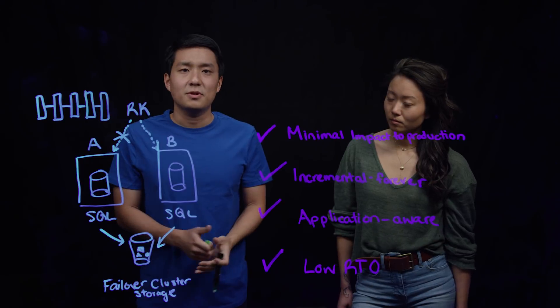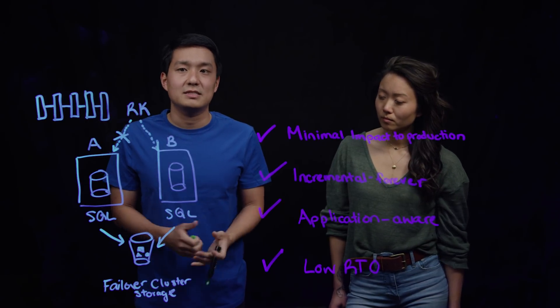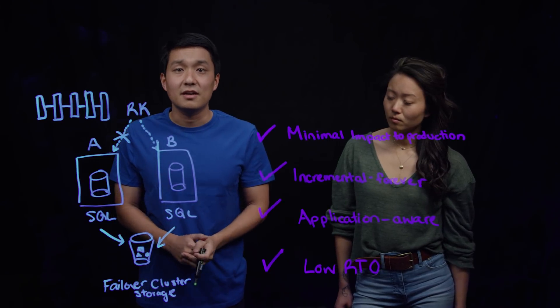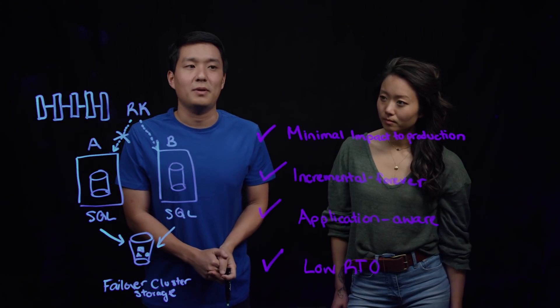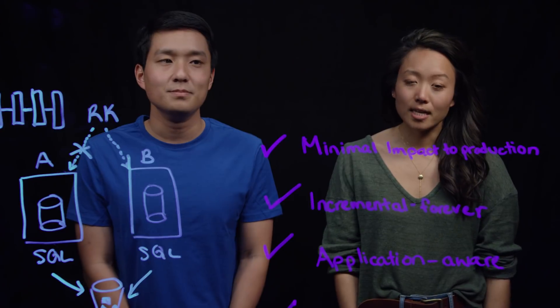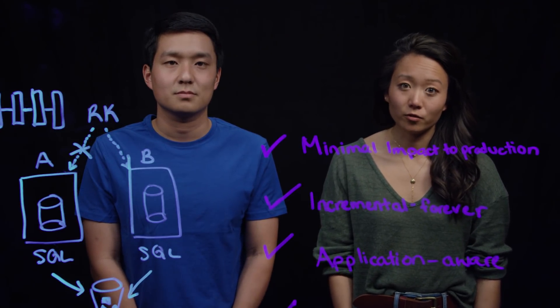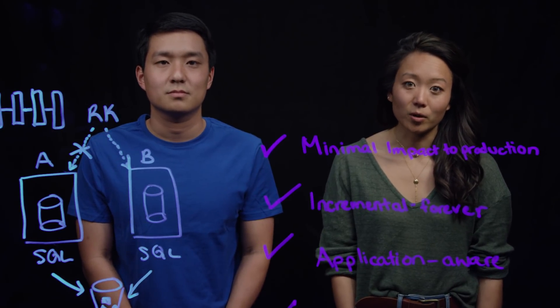We interact with always-on availability groups very similarly. We detect databases that are a part of these groups. And in the case of an availability group Failover, a similar thing occurs. No new full backup is required and no manual steps are needed. This has a huge impact on enterprises. A backup strategy based on incremental forever backups gives you lower RTOs as well as capacity and network savings.